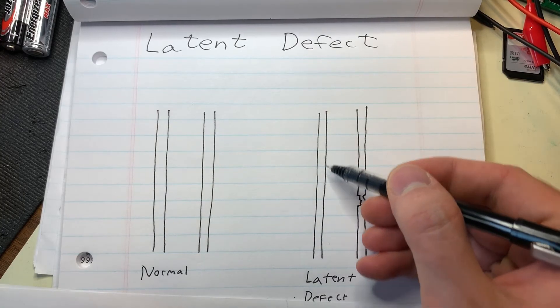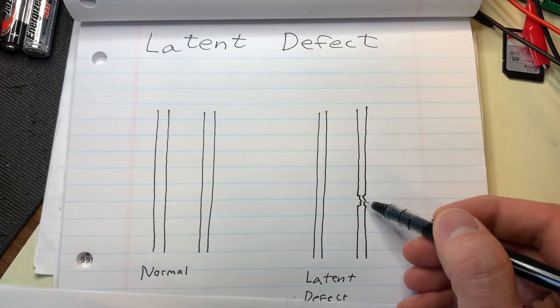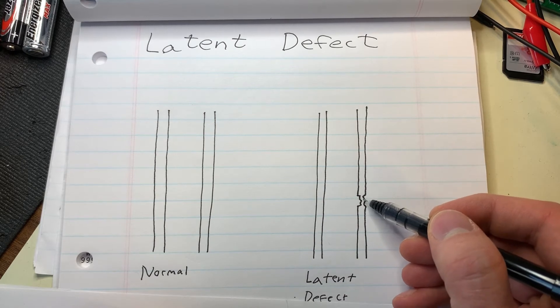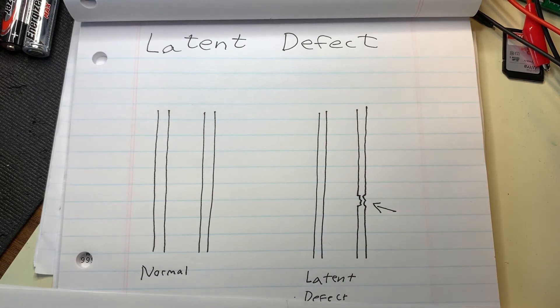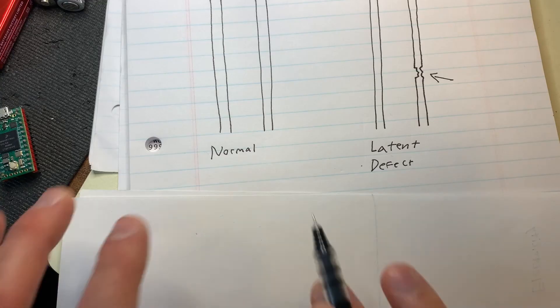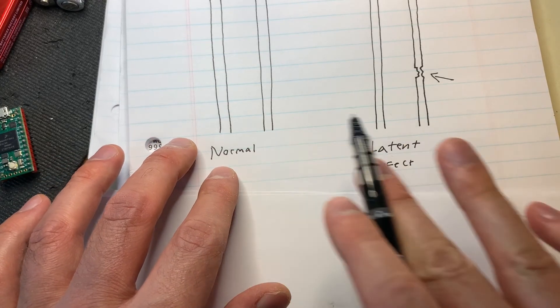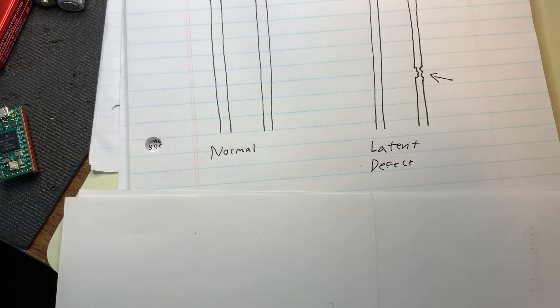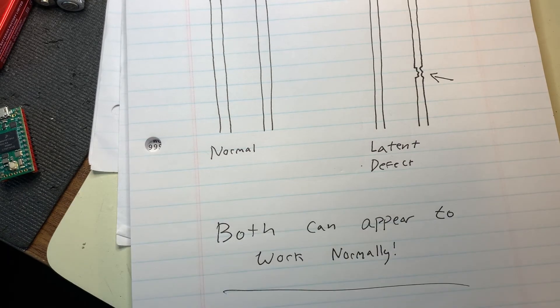So while this trace was unaffected, this trace has been damaged, and there's large chunks of it that may be missing or damaged. But this is where it becomes a little bit tricky. When you're going to test whether it is normal or has some kind of latent defect, both of them can appear to work normally.